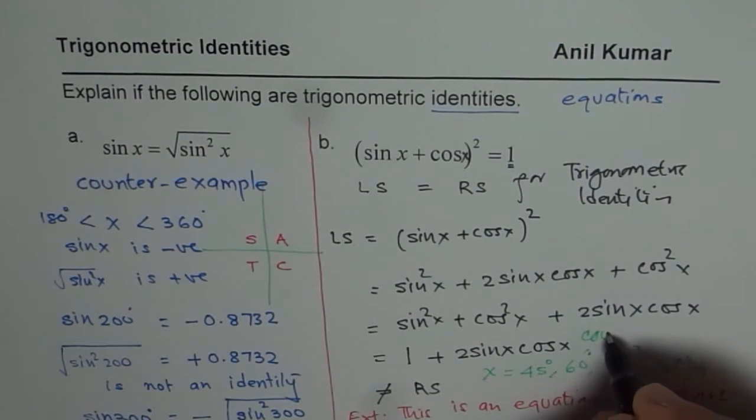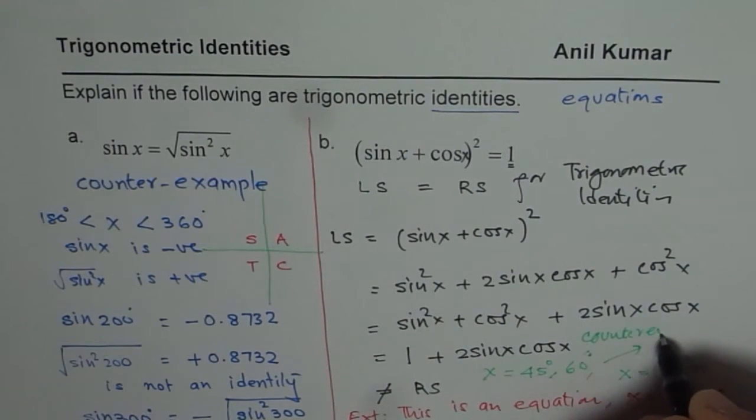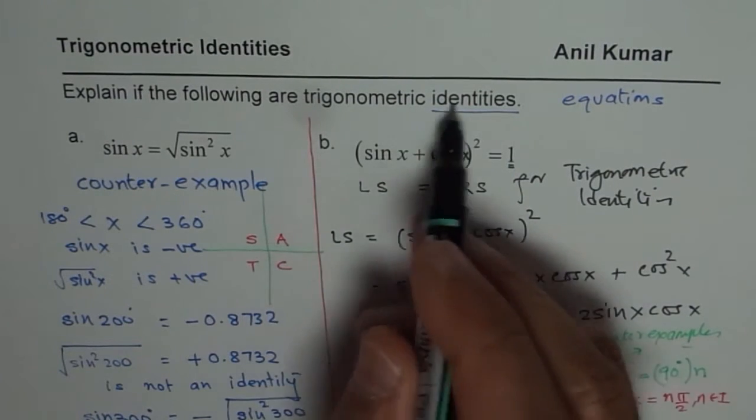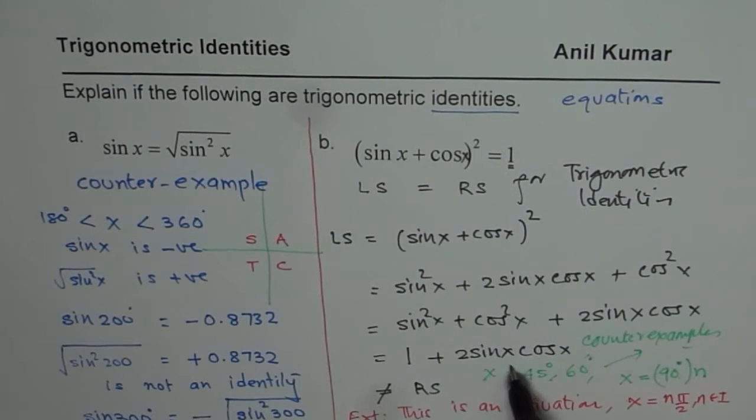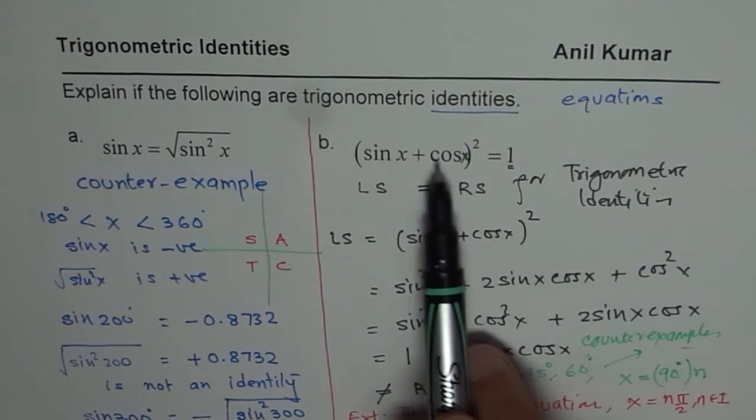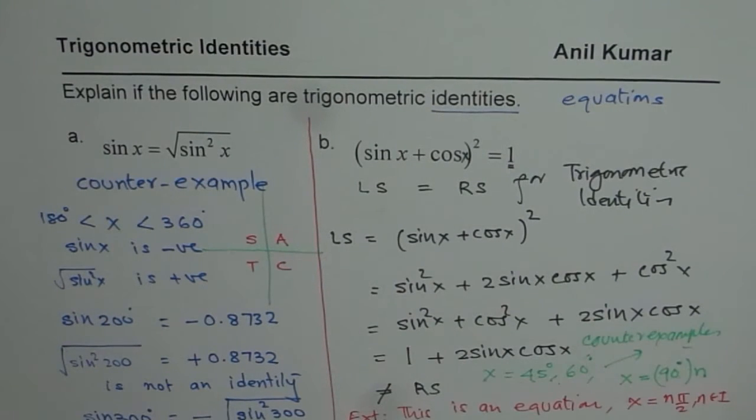To prove that it is not an identity, we could just substitute one value of x and show that this left side is not 1, and therefore, it is not an identity. I hope you understand the concept.